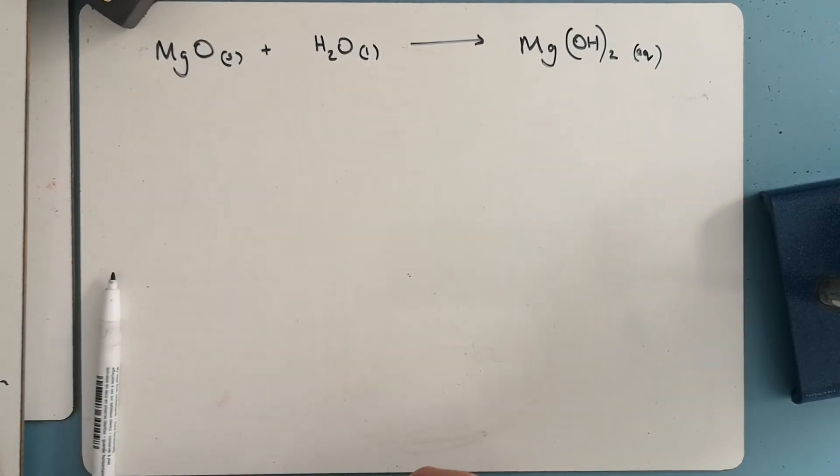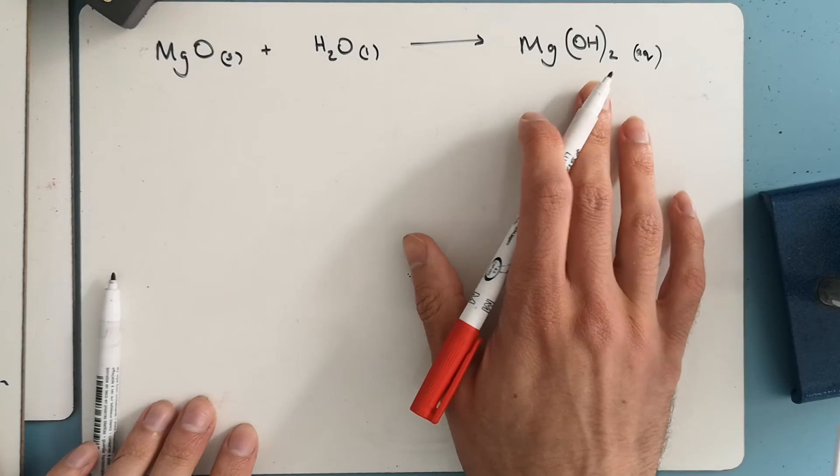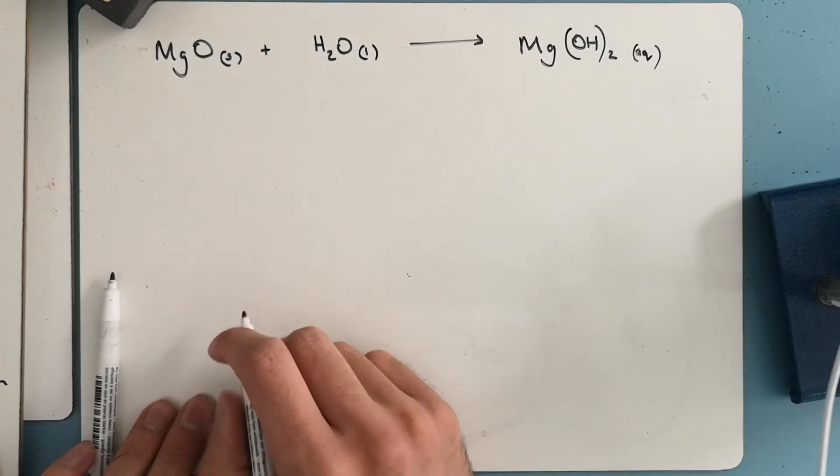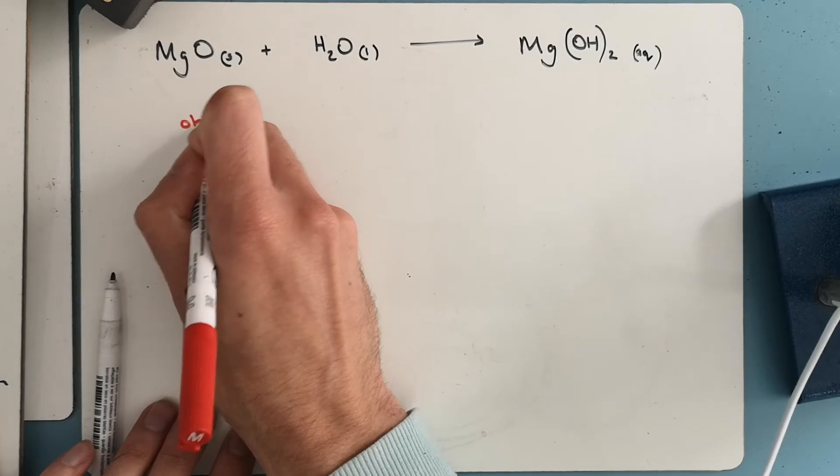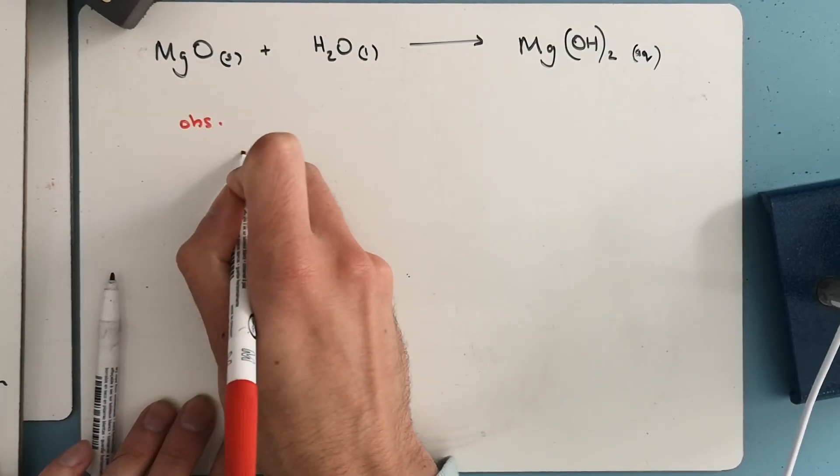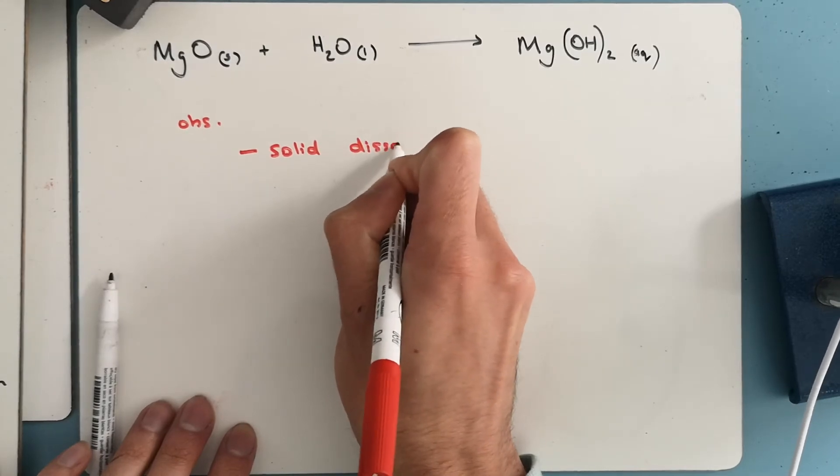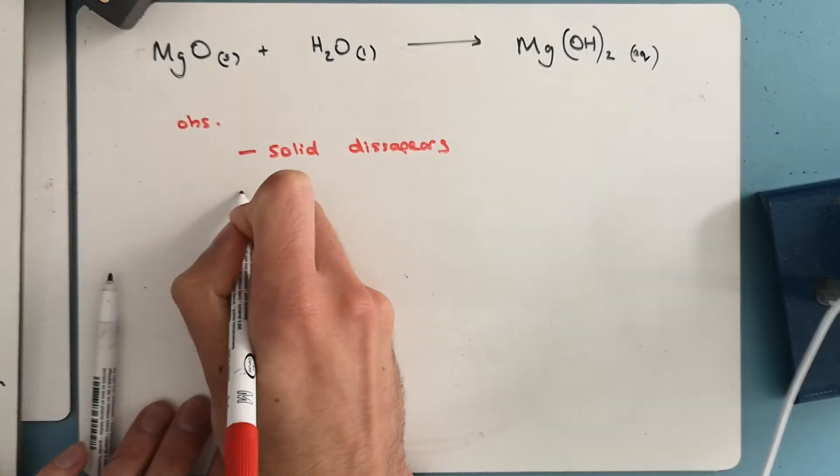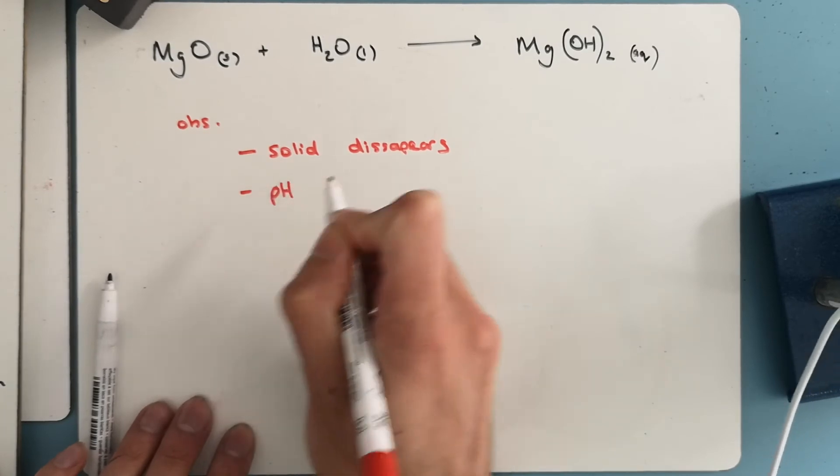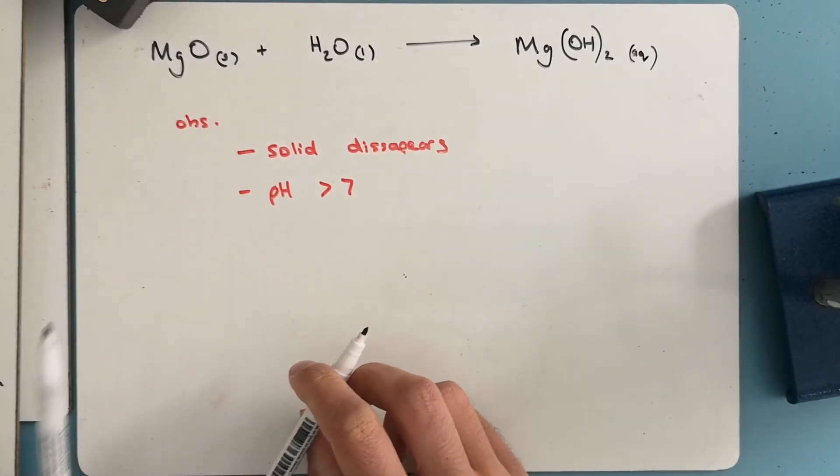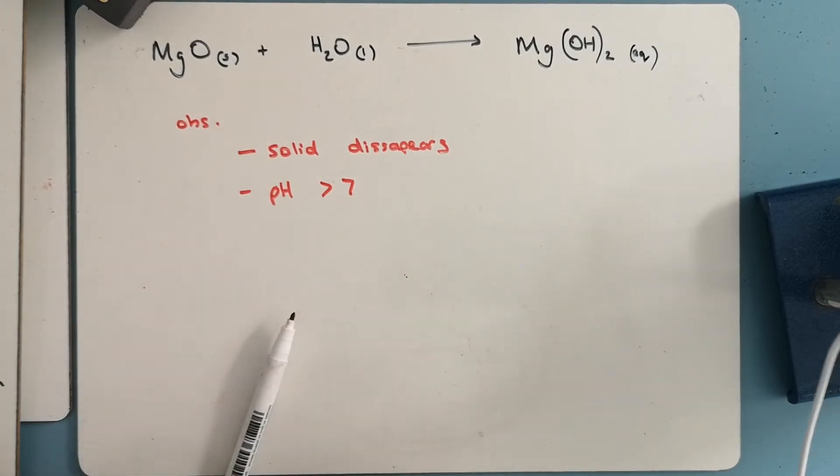We'd also, if we measured the pH, because we've got hydroxide ions here, then the pH would be above seven. So observations: solid disappears, solid to aqueous. pH would be greater than seven. We'll get an alkaline solution.